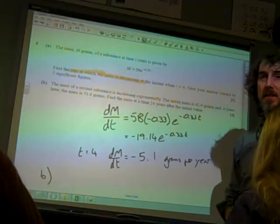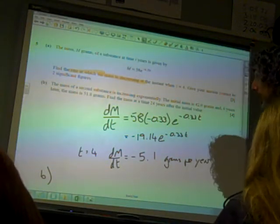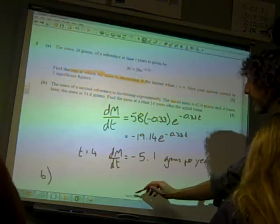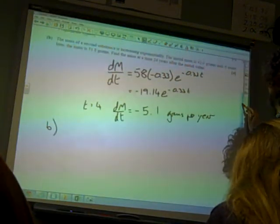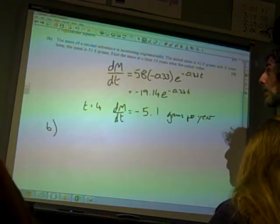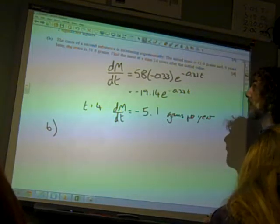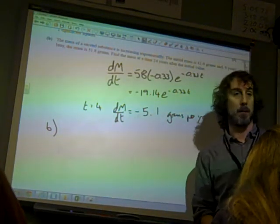Right, part b. The mass of a second substance is increasing exponentially. The initial mass is 42 grams, and six years later the mass is 51.8 grams. Find the mass at a time 24 years after the initial bugging.